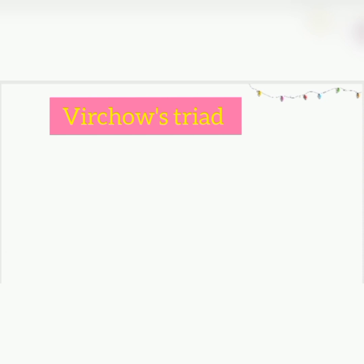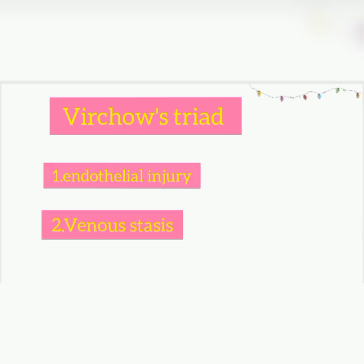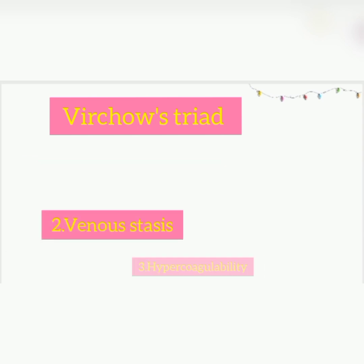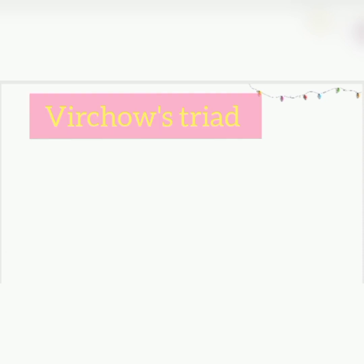One of the factors that contributes to deep vein thrombosis is endothelial injury, another factor is venous stasis, and then the last is a hypercoagulable state. We'll talk more about this, but before that let's look at the difference between what a thrombosis is and what an embolus is, because sometimes it can be confusing.